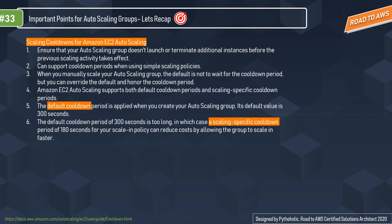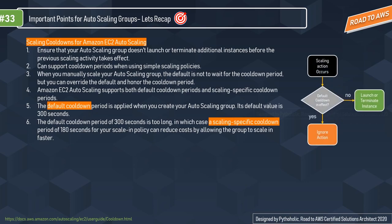When you manually scale your ASG, the default action is not to wait for the cooldown period, but you can override this. The default cooldown period is 300 seconds, applied when you create your auto scaling group. If 300 seconds is too long, you can use a scaling-specific cooldown of 180 seconds for your scale-in policy, which reduces cost by allowing the group to scale in faster. If the default cooldown is in effect, the scaling action is ignored; otherwise, instances are launched or terminated.